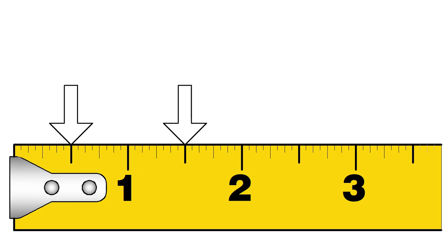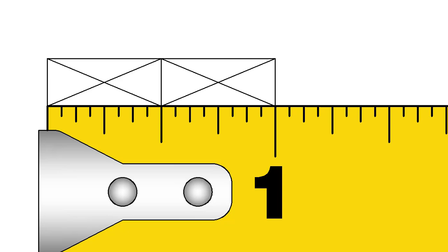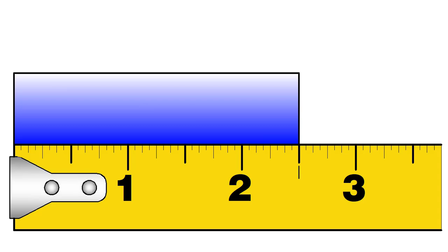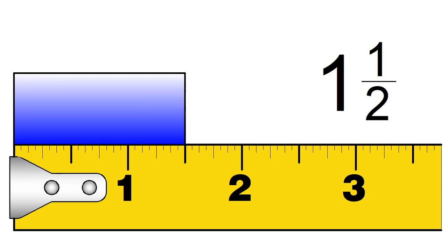Now let's look at the marks that divide the inches into smaller bits. Notice how each inch is marked at the halfway point. Notice that this mark divides the inch into two equal parts. Each part is one half inch. In this image, the measurement is two and a half inches.